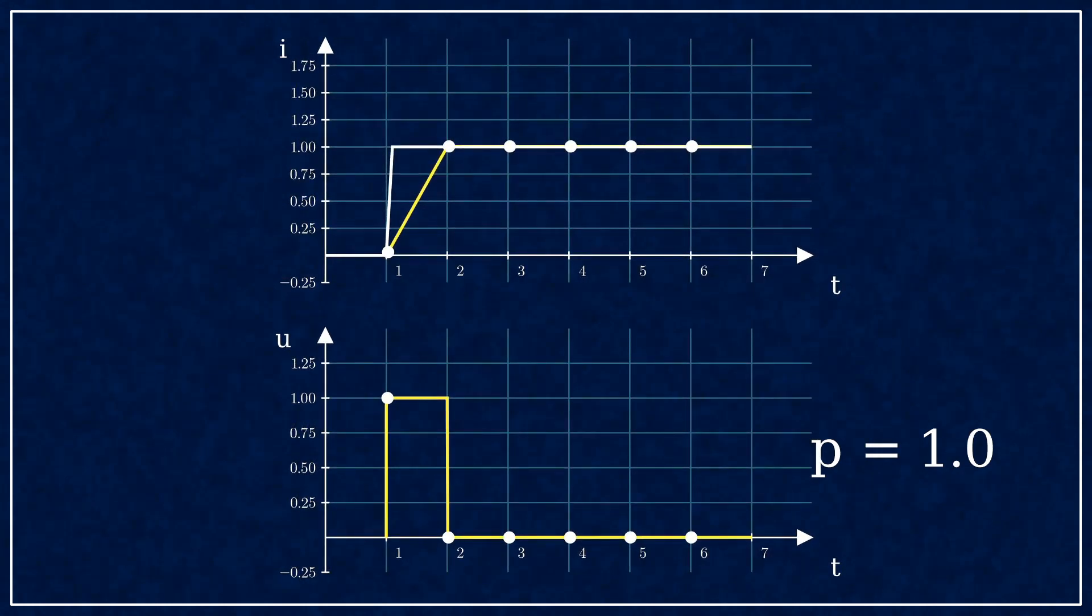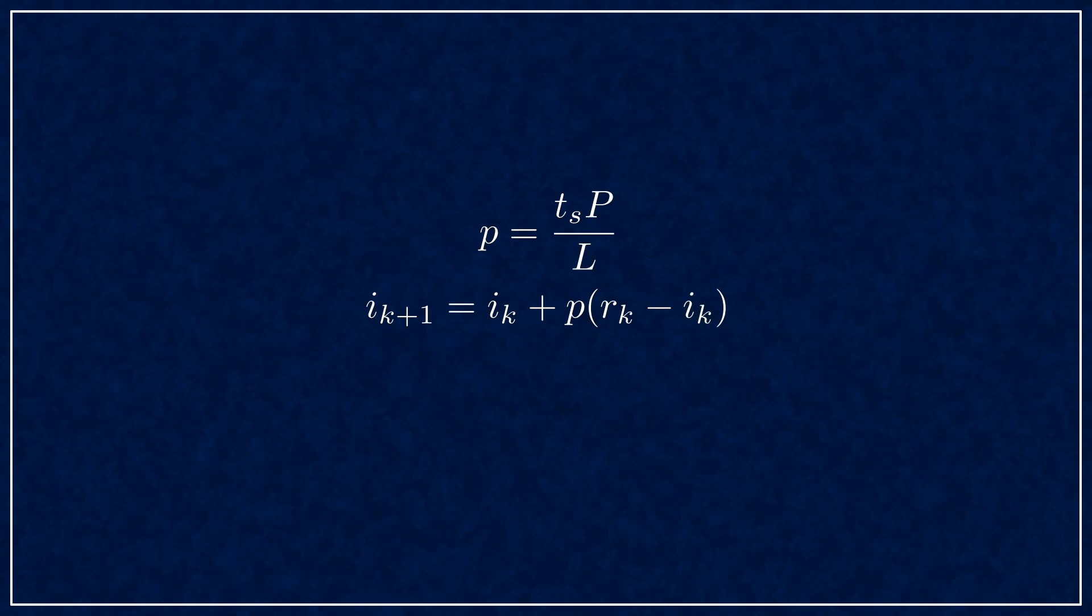There's a special case for p equals 1, which is an ideal gain and it converges in a single step. Now let's check the stability while keeping everything symbolic as long as possible.